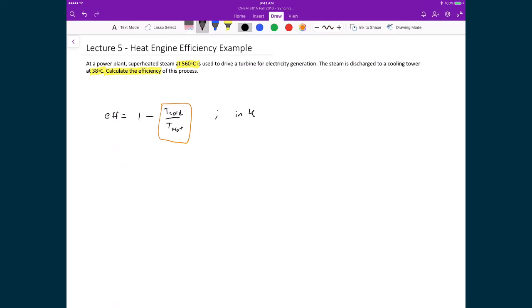You need to always do these things in Kelvin. If we write these down in Kelvin we have 560 degrees plus 273.15 which gives 833.15. And the other one is 38 plus 273.15, which equals 311.15.